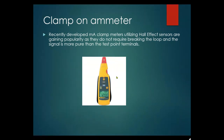The milliamp clamp meter, like the Fluke version, has a very small aperture — similar to a clamp-on ammeter for larger currents but scaled for milliamp-level signals. They're fairly accurate and you can put them anywhere on the loop because the loop is a series circuit — the current is the same everywhere in the loop.